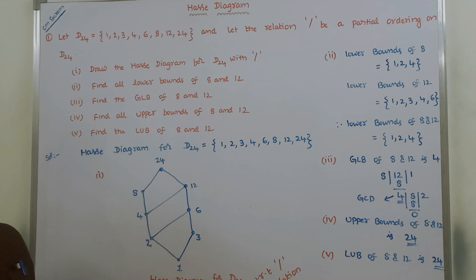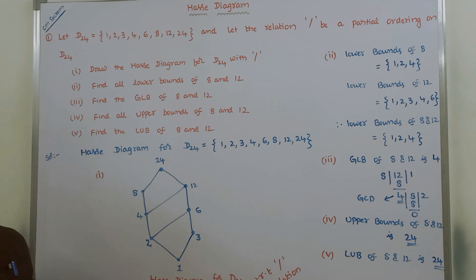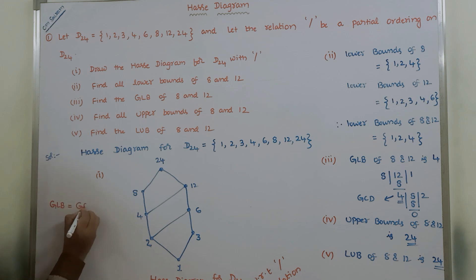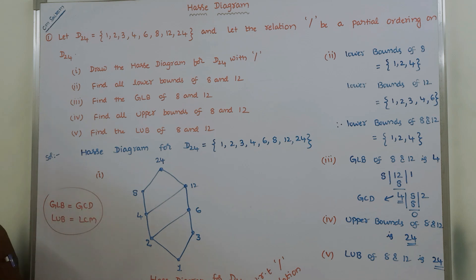In summary, to solve a Hasse diagram problem: first draw the Hasse diagram, then find the lower bounds, from which you find the greatest lower bound (GLB), then find the upper bounds, from which you find the least upper bound (LUB). Keep in mind: GLB of A and B equals GCD of A and B, and LUB of X and Y equals LCM of X and Y.